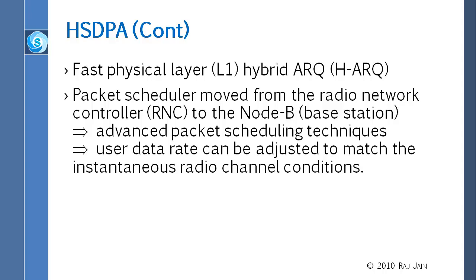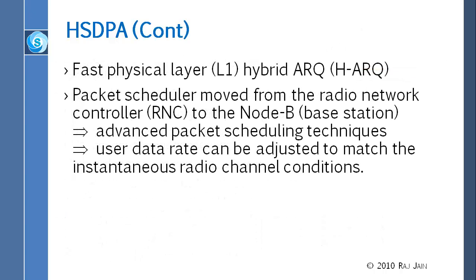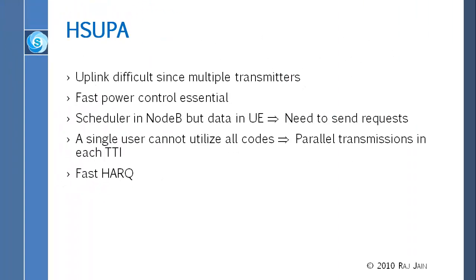The third HSDPA improvement was moving the scheduler to Node B. Previously Node B was dumb, and scheduling decisions had to go to the RNC miles away. For HARQ and dynamic scheduling to work efficiently, decisions need to be made close to the action — right at the base station. So with HSDPA, scheduling decisions are made at Node B without going to the RNC.